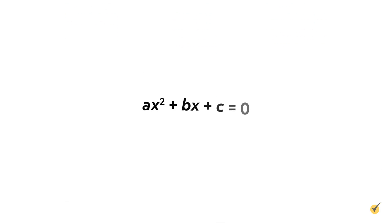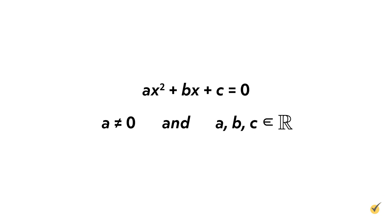A quadratic equation in standard form is written as ax squared plus bx plus c equals zero, where a does not equal zero and a, b, and c are all real numbers. We can solve a quadratic equation by factoring, completing the square, using the quadratic formula, or analyzing the graph of its function.